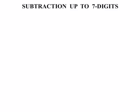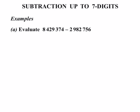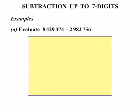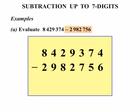Let's move on to do some subtraction up to 7 digits. A couple of examples. The first one, evaluate 8,429,374 minus 2,982,756. Well, again, let's bring in some working space, and let's rewrite these numbers very carefully, underneath each other to the digits.